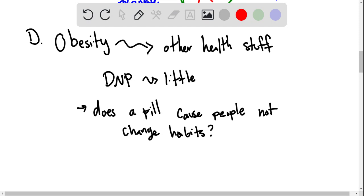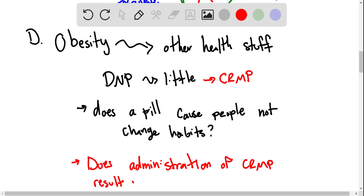So one thing that makes a scientific question is testability. So this slow release of DNP is also called CRMP. So we could say, does the administration of CRMP result in additional lifestyle changes?